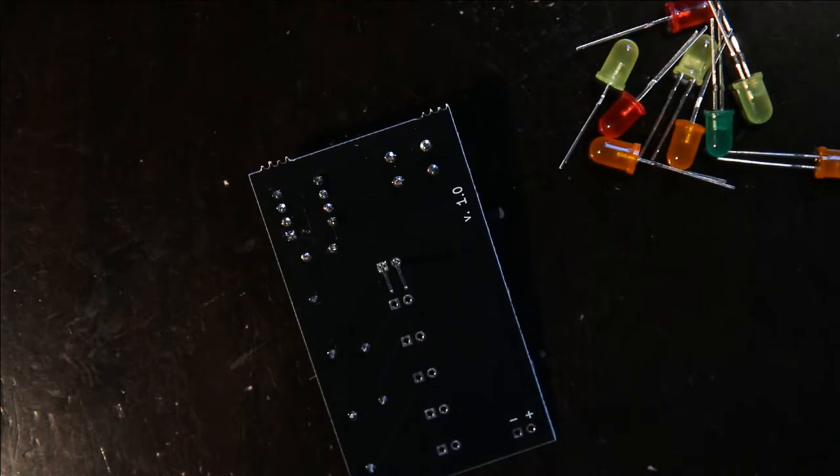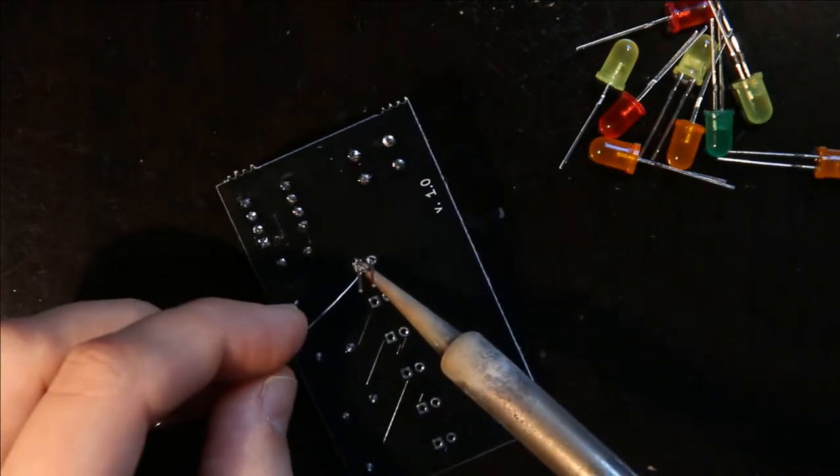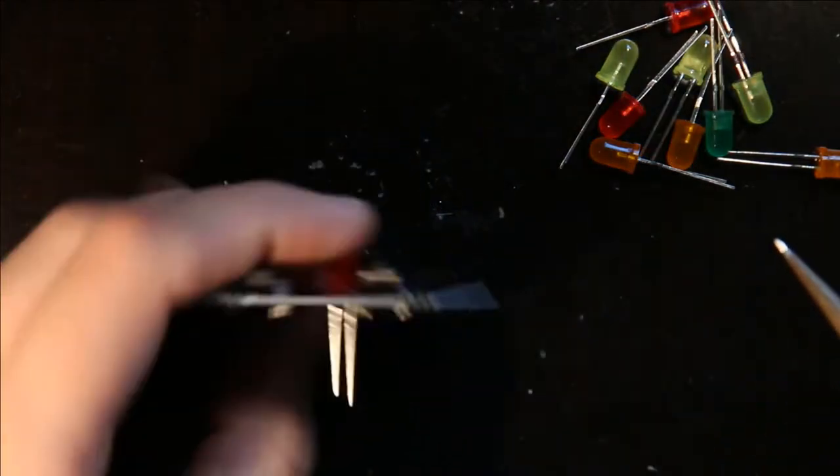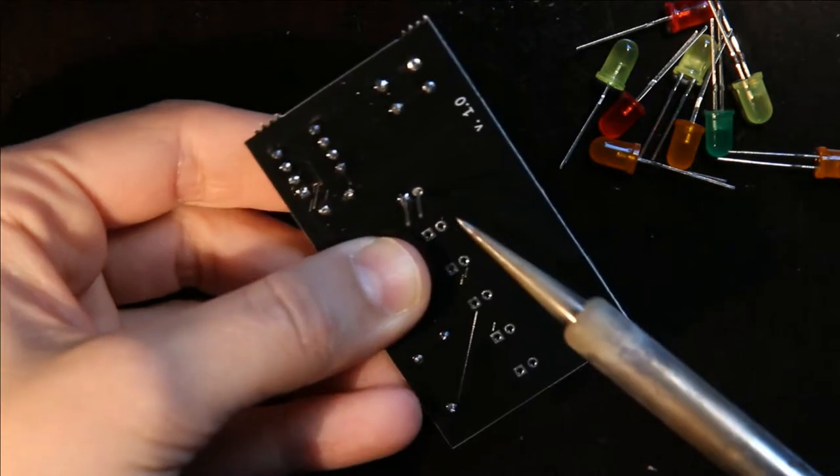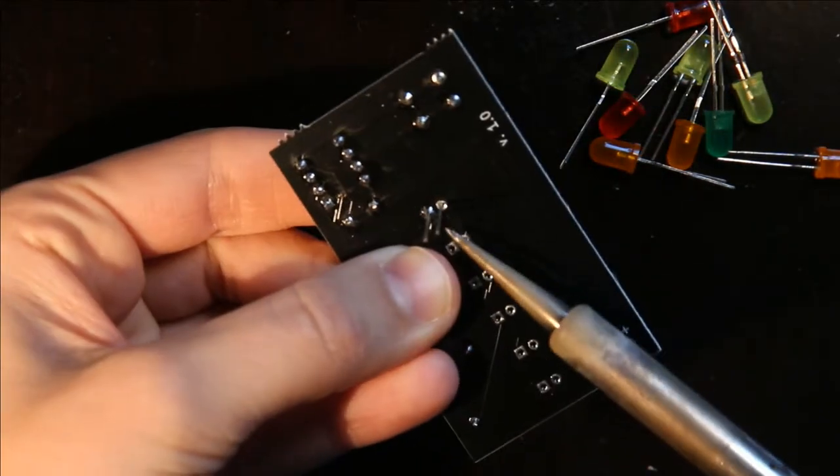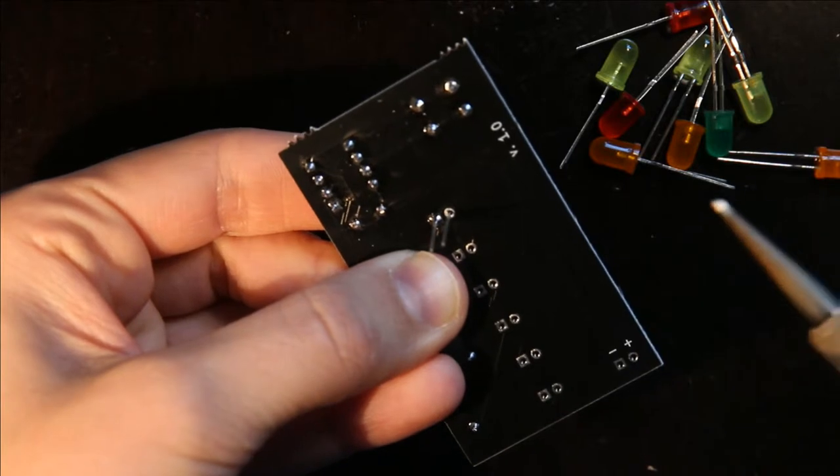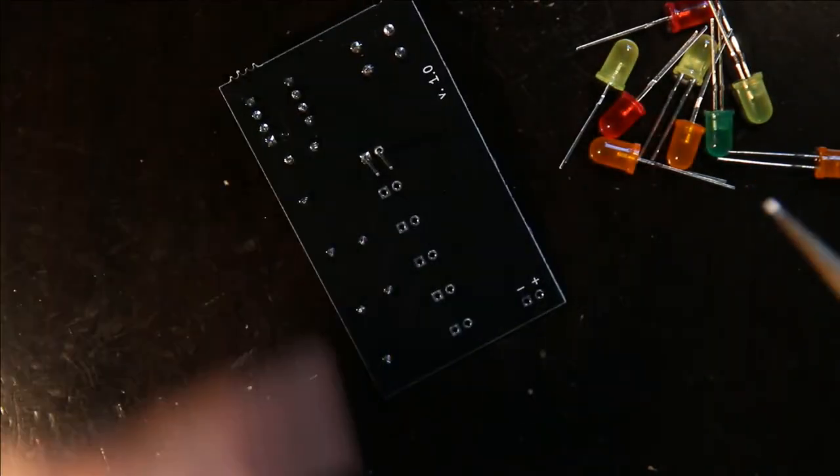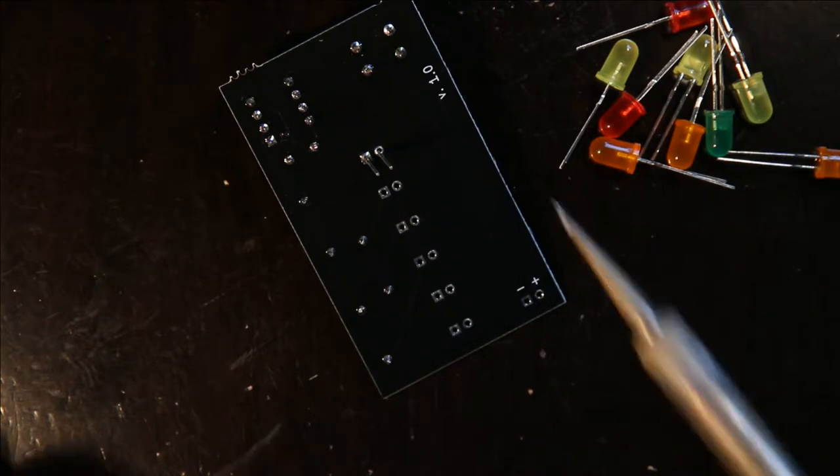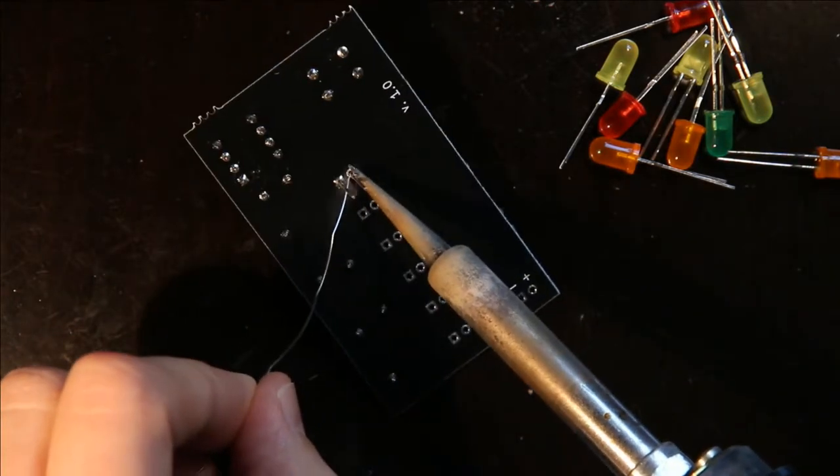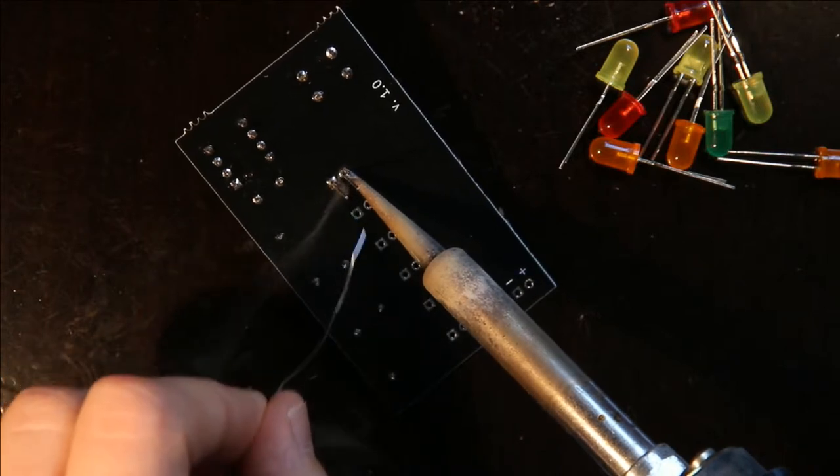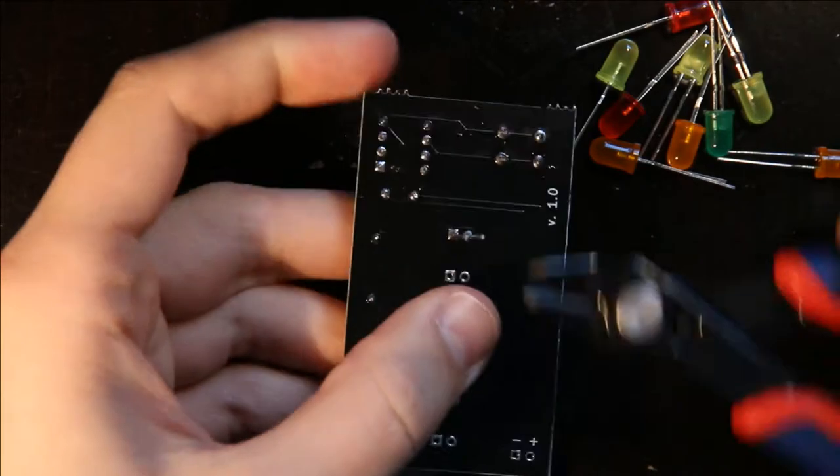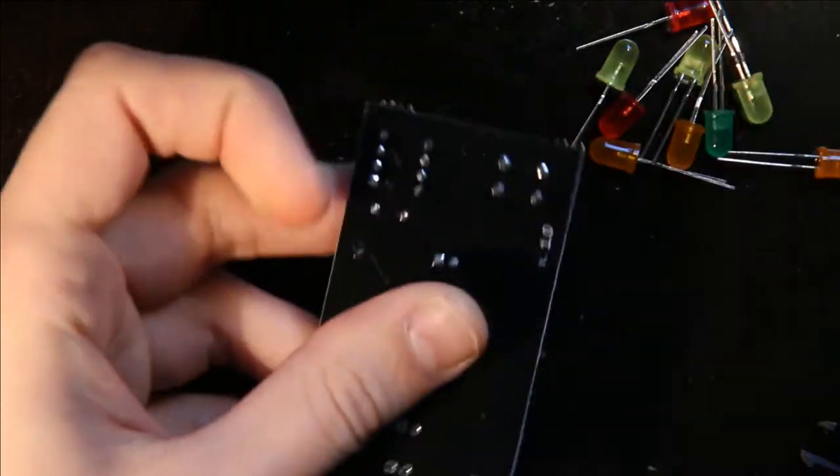Then I thread it through and solder one pin. Then I put my finger on it like this, remelt that pin while pushing, and then it's perfectly flat on the board. Then I can solder the other lead and trim them off.